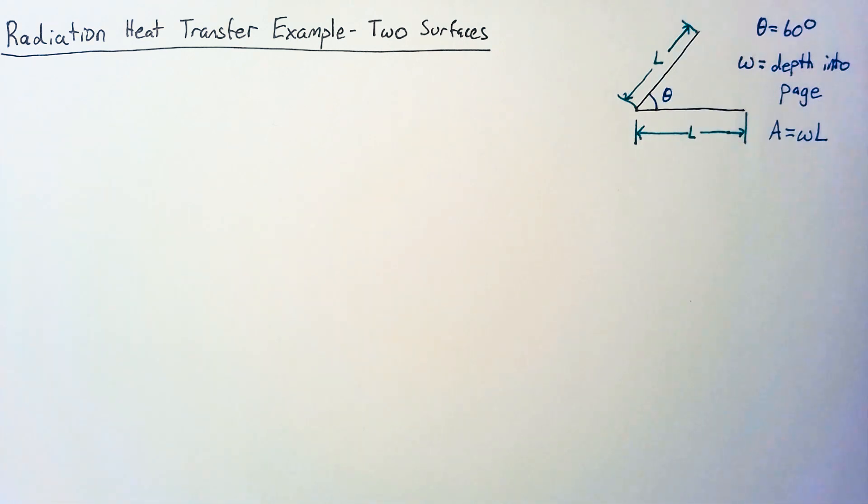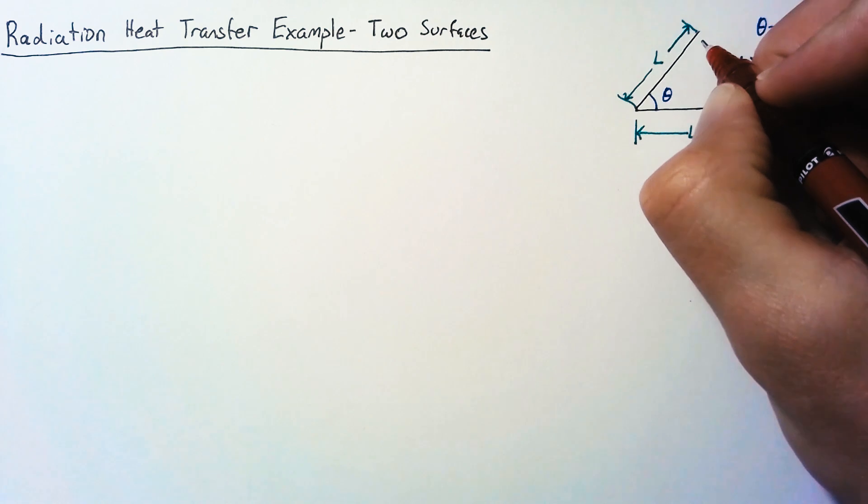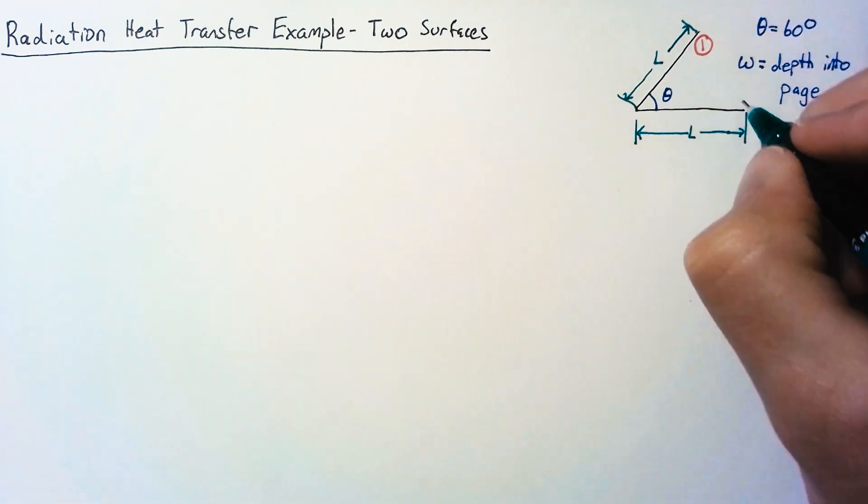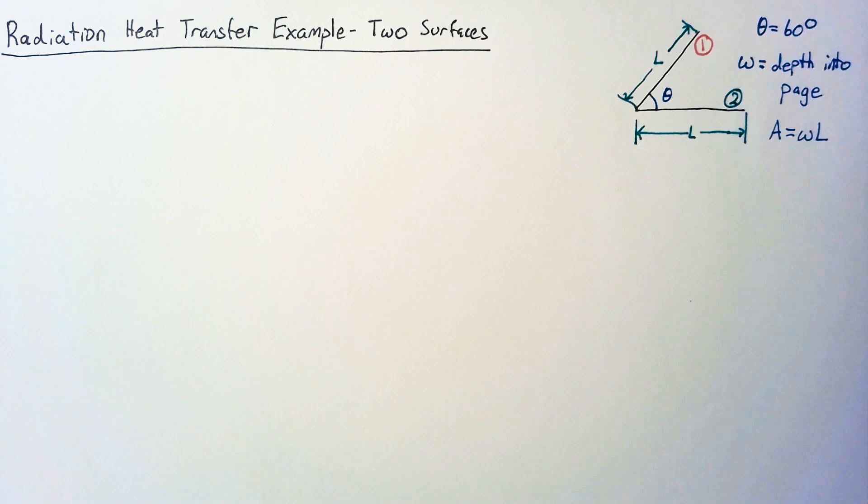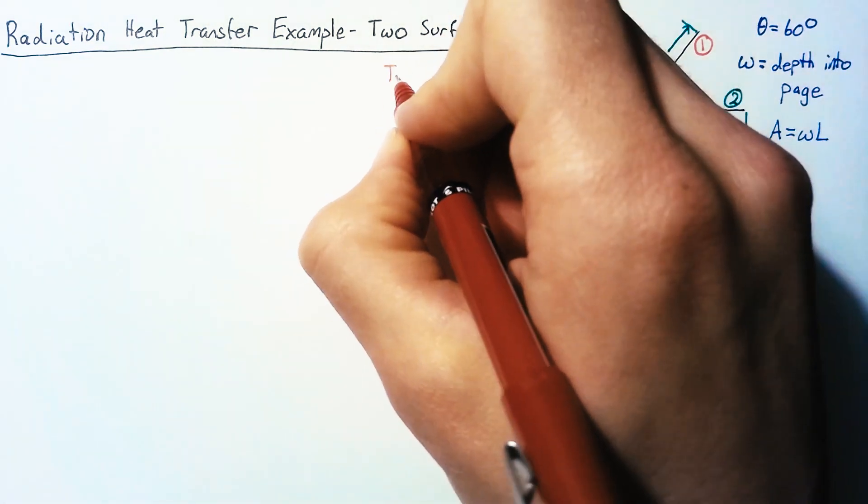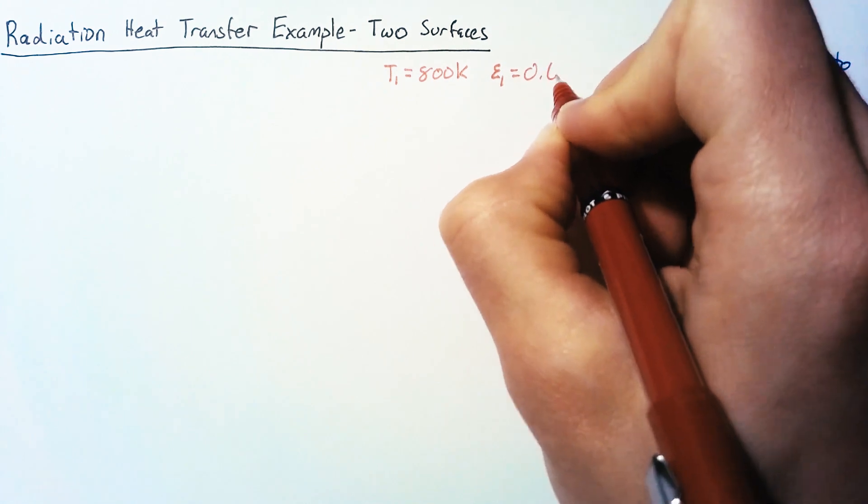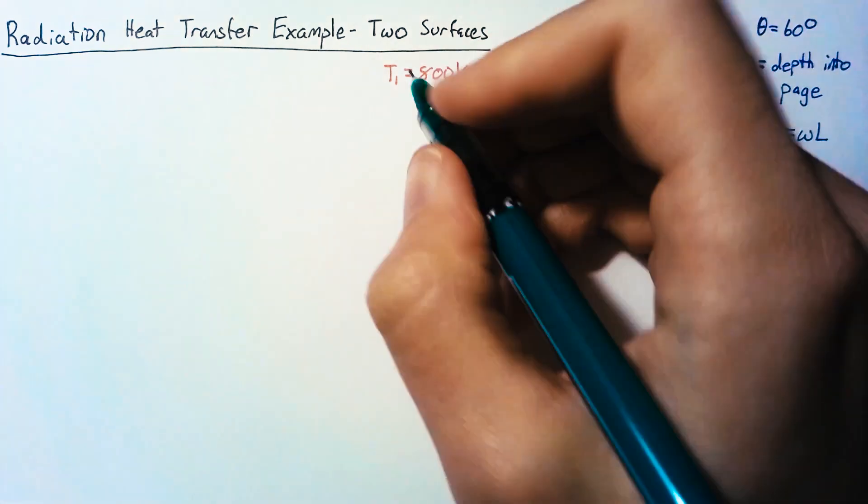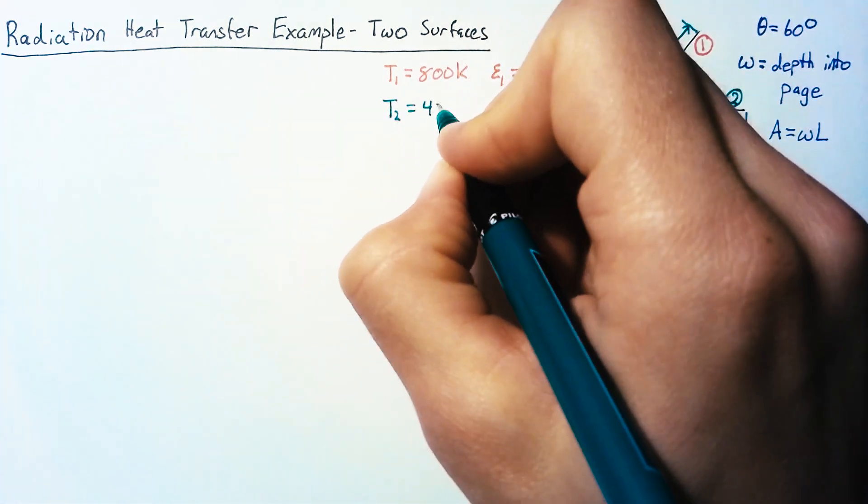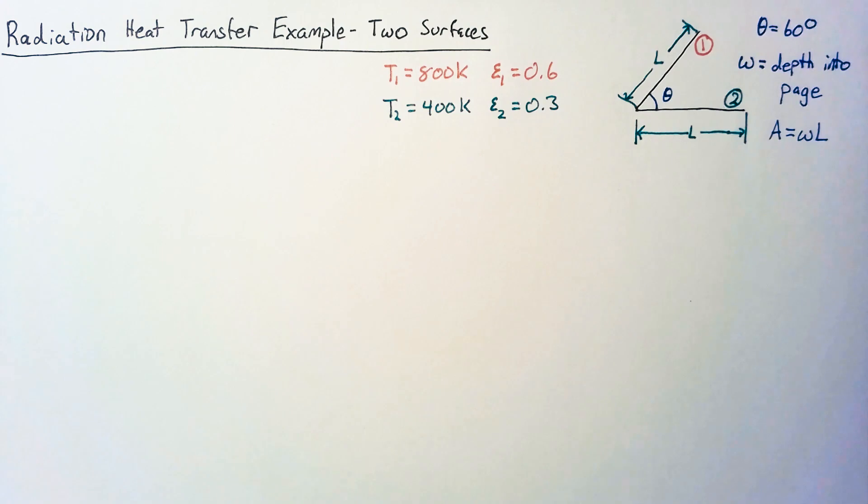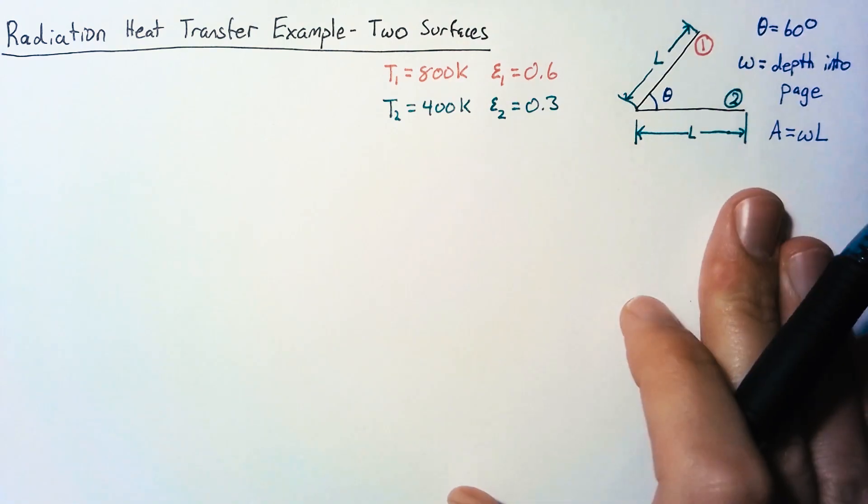Now to get the full picture, we also need to define the temperature and the emissivity of each of these surfaces. Let's call this surface 1 and this surface 2. So for surface 1, the temperature is going to be 800 Kelvin, and the emissivity is going to be 0.6. And then for surface 2, the temperature will be 400 Kelvin, and the emissivity is going to be 0.3. So that will be everything we know about the problem.